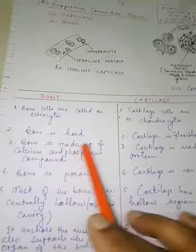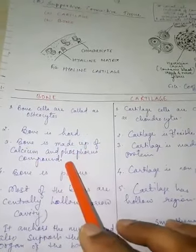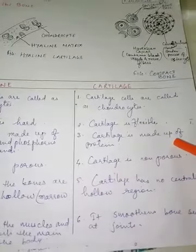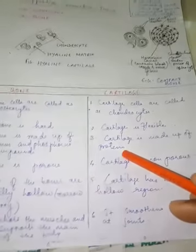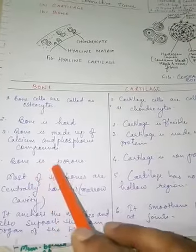Bone is made up of calcium and phosphorus compounds, while cartilage is made up of proteins.